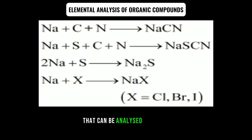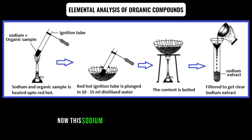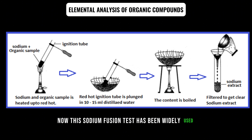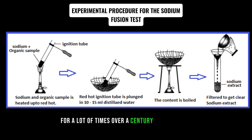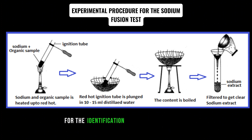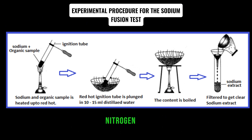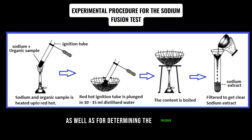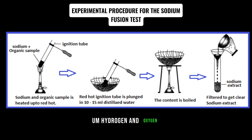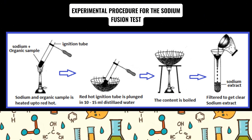The sodium fusion test has been widely used for over a century, proving to be a reliable and versatile method for the identification of organic compounds. It is particularly useful for detecting functional groups such as nitrogen, sulfur, and the halogens, as well as for determining the presence of certain elements including carbon, hydrogen, and oxygen.